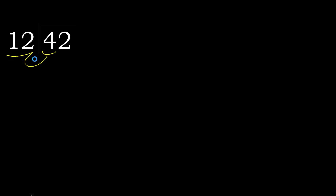42 divided by 12. 4 is less, therefore next. 42 is not less, therefore we work with 42. We find which number, when multiplied by 12, is nearest to 42 but not greater.